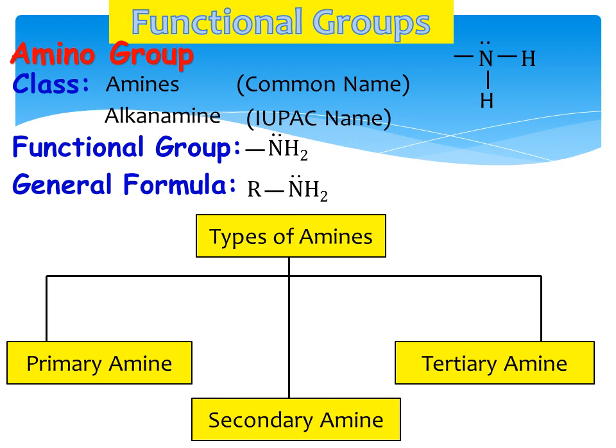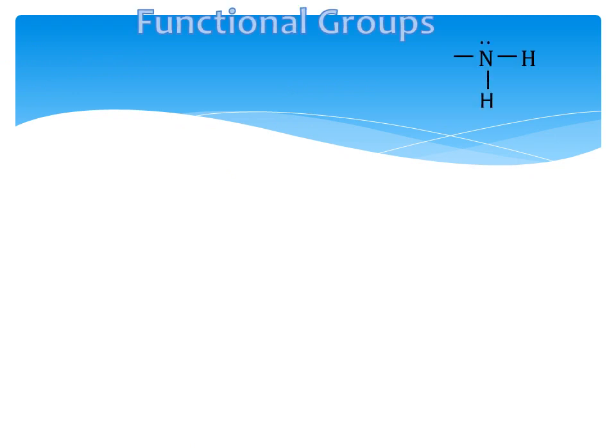The IUPAC functional group name is alkanamines. The general formula is NH2. The classification of amines is very important — we have primary amines, secondary amines, and tertiary amines. Notably, this classification is a bit different from the classification we discussed for alcohols, where we categorized based on which carbon is attached to the OH group.